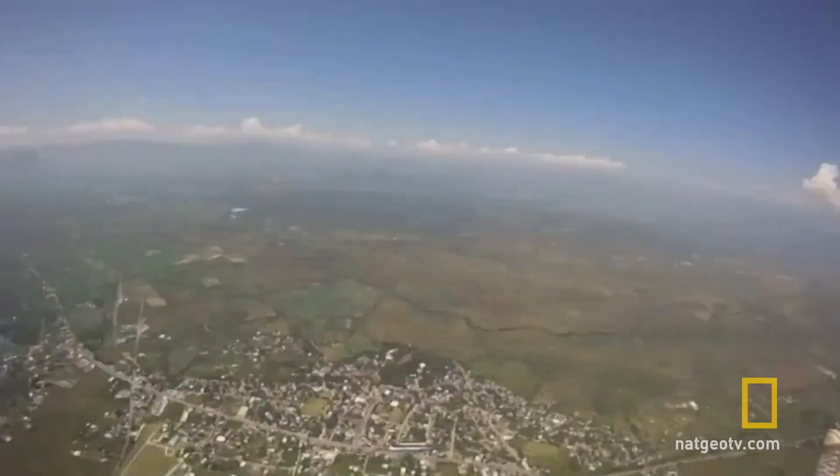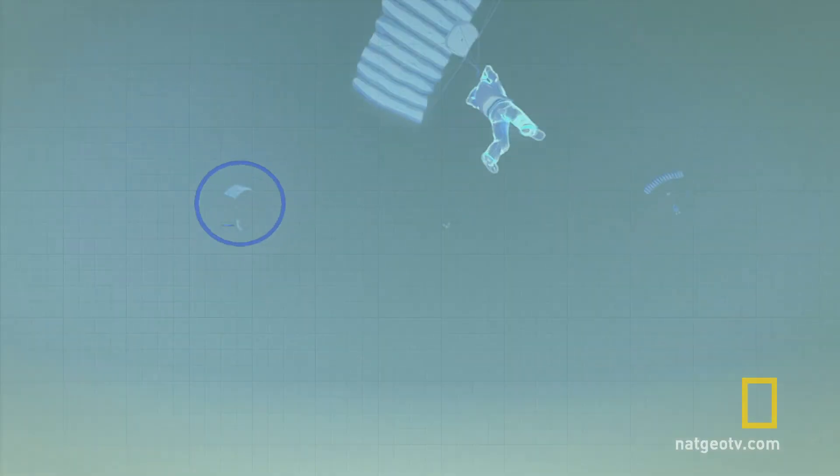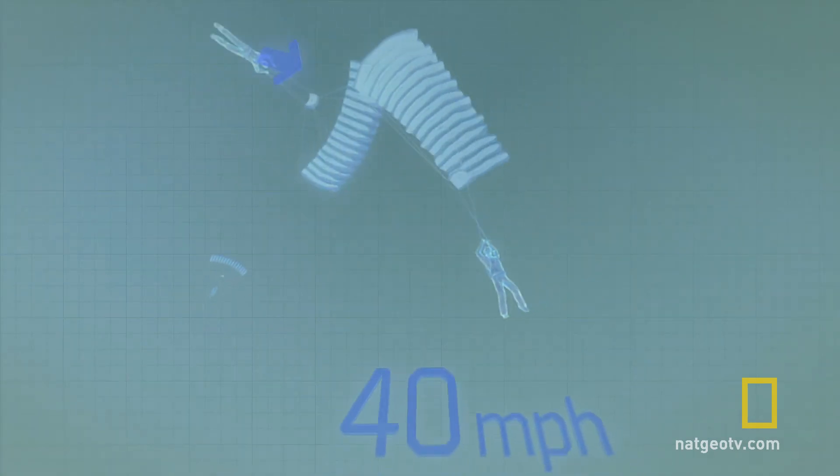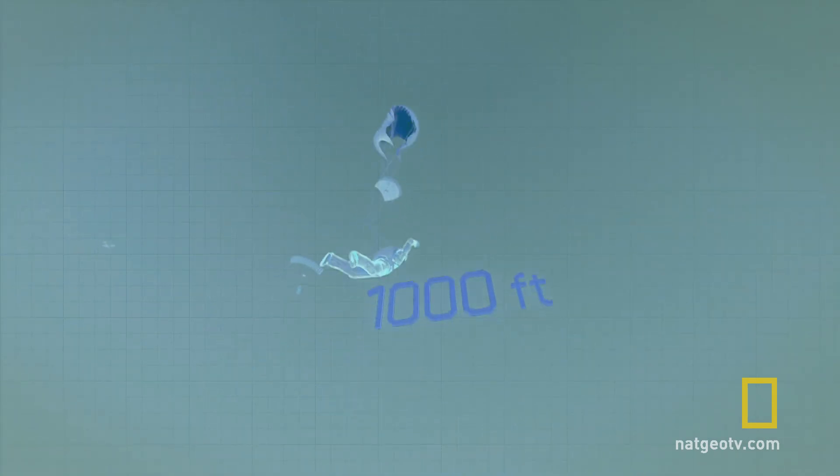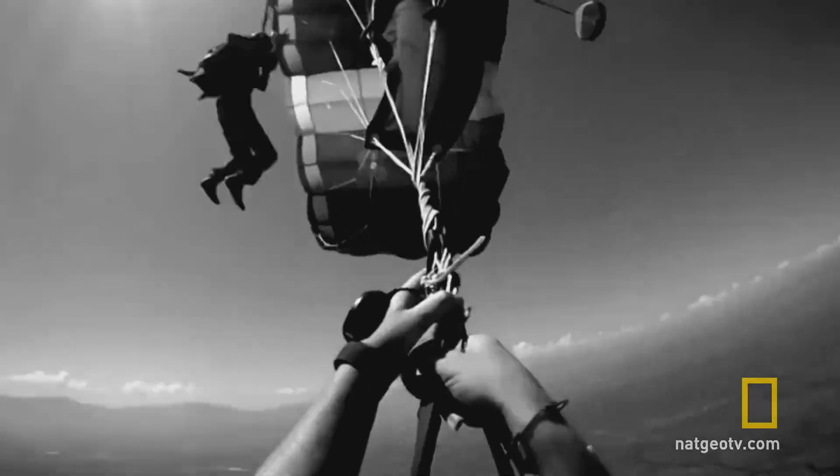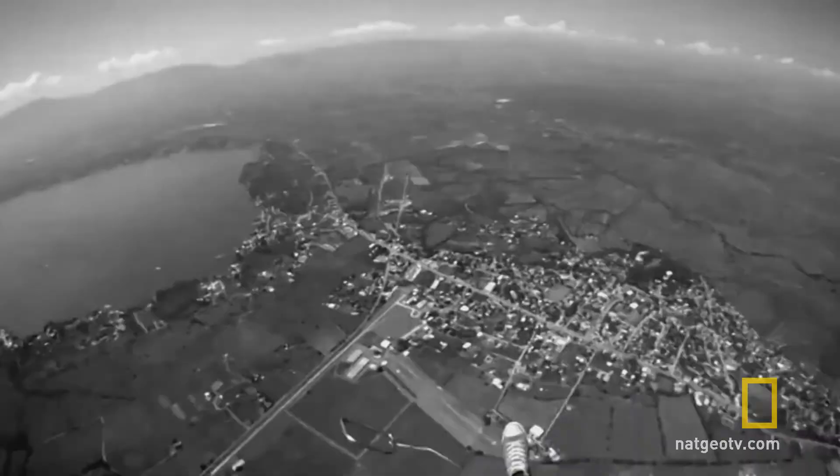The skydivers collided at three and a half thousand feet. Their close proximity and the twisted chute were the key clues. After the 40 miles per hour collision, the jumper fell for a thousand feet before activating his reserve chute. Miraculously, they both landed without major injury, but this brush with death is one that will stay with them forever.